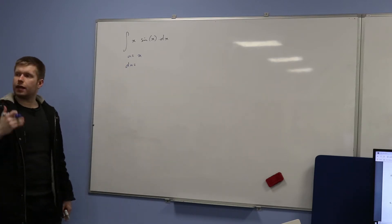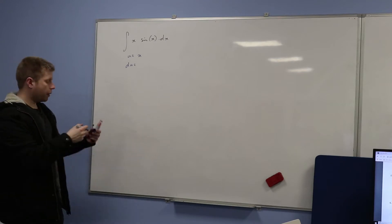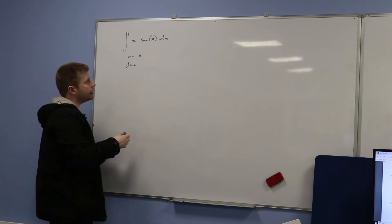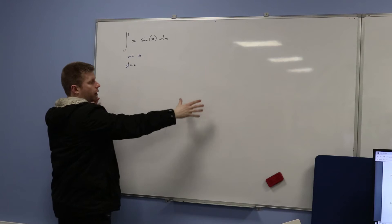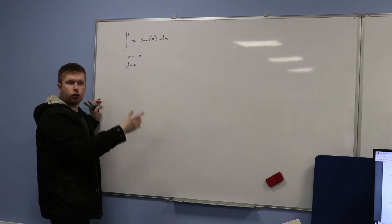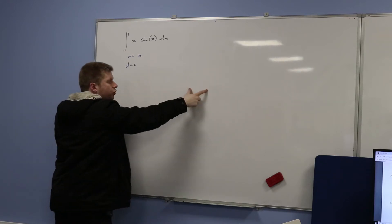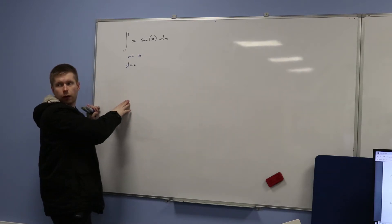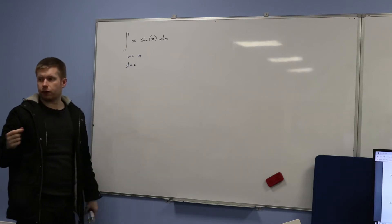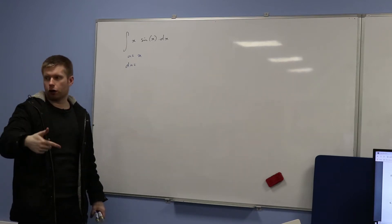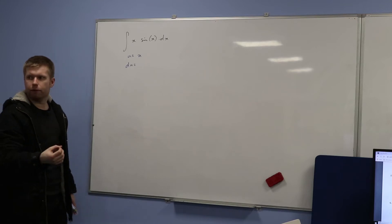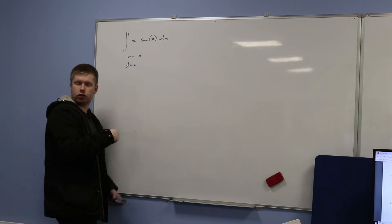In the next step it will become clear, because when you end up using the by-parts formula there's another integral. You want that integral to be easier than the integral you start with. Usually if you let it equal the wrong one, it will come out as a harder integral. So if that happens, just go back and swap these over.